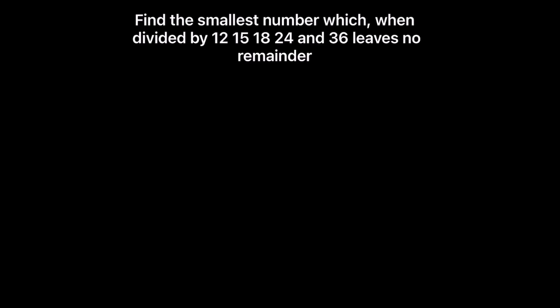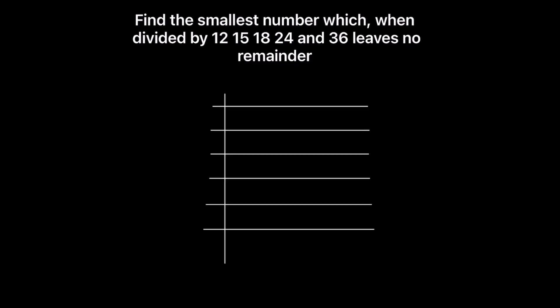We are going to find the LCM of all these numbers. For finding that smallest number using the least common multiple, we are going to use the prime factorization method and find the prime factors of all these numbers. So let's use the ladder method for finding the LCM. Let's write the numbers: 12, 15, 18, 24, and 36.